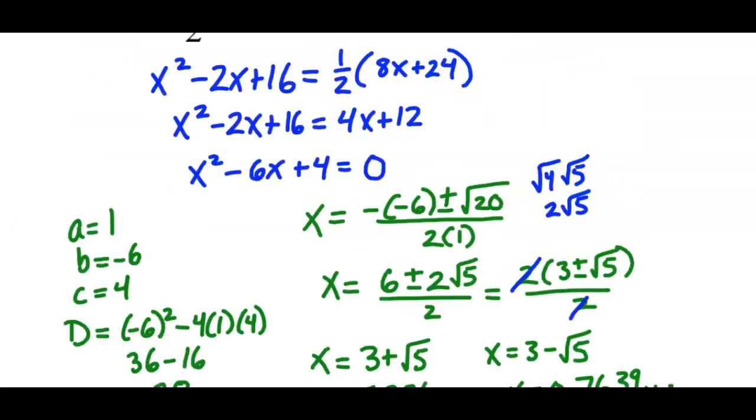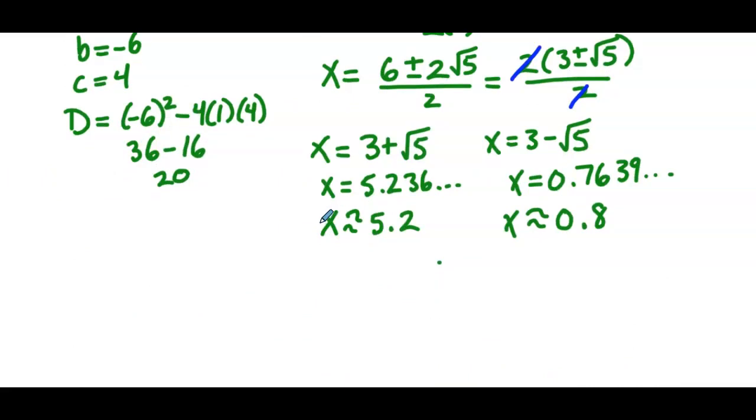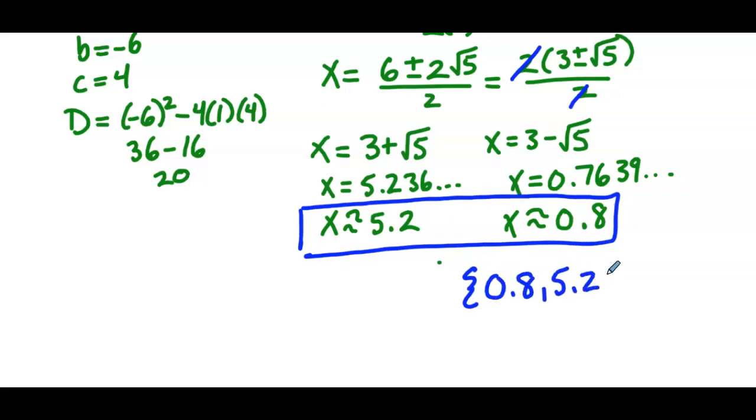Again, going back to the original problem, we're only solving for the values of x because technically we're solving this equation, which only has x in it. So here are the two solutions. If we wrote it in a solution set, we'd have 0.8 and 5.2.